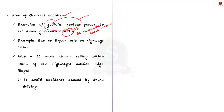For example, take the ban on liquor sale on highways case. In the year 2016, the Supreme Court under Article 142 made it illegal to sell alcohol within 500 meters of the highway's outer edge. This decision was made to avoid accidents caused by drunk driving. This is an example of using extraordinary powers by the Supreme Court under Article 142.